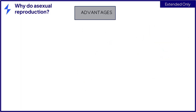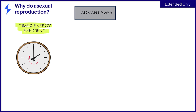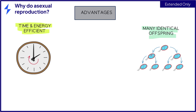For those of you studying the extended syllabus content, there are many advantages of organisms carrying out asexual reproduction. These include that no energy is wasted on trying to find a mate. There is often a rapid reproduction cycle, so it is much faster than sexual reproduction. It often leads to many identical offspring, which is particularly useful in the agriculture world and the production of crops. Other advantages include that the organism can quickly colonise a local area and also successful and useful traits are passed on to offspring.